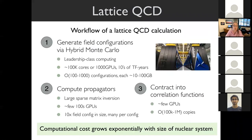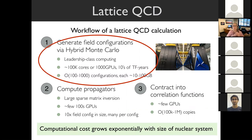The workflow of a calculation like this is: first you generate samples of the field configurations, typically via hybrid Monte Carlo—a massive computational task requiring leadership-class computing, hundreds of thousands of cores or thousands of GPUs, tens of teraflop-years. In the end you want thousands of samples, where each sample is 10 to 100 gigabytes. Other aspects of the workflow include very large sparse matrix inversions—essentially solving the Dirac equation to compute quark propagators—and contractions to form final observables of interest. Both are also candidates for machine learning acceleration, but that's not the focus today.